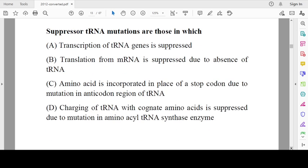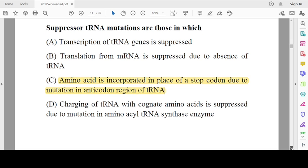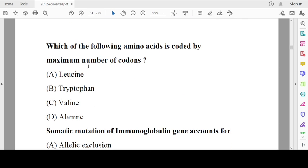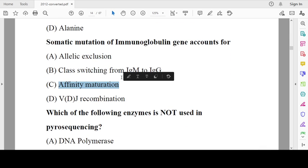Suppressor tRNA mutations: suppressor tRNA mutations are those in which amino acids will be incorporated in place of stop codons due to mutations in the anticodon region of tRNA. So it suppresses the effect. Suppressor tRNA are those in which amino acid will be incorporated into the place of stop codon due to mutation in the anticodon region of tRNA. Leucine is coded by the maximum number of codons. Somatic mutation of immunoglobulin genes accounts for affinity maturation.